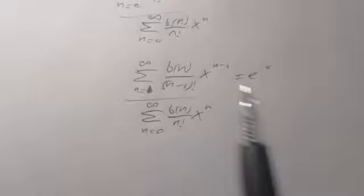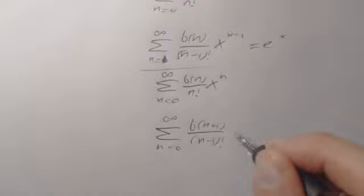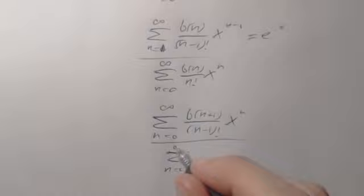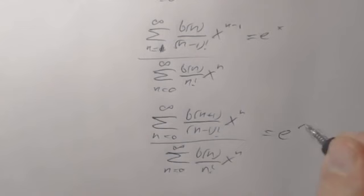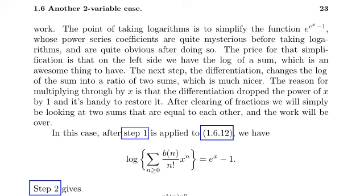Multiplying through by x restores the power dropped by differentiation. After clearing fractions by multiplying both sides by the denominator, we get the sum from n=1 to infinity of B_n / (n-1)! times x^n equals x e^x times the sum from n=0 to infinity of B_n / n! times x^n. The book left it in the form n/(n!) rather than 1/(n-1)!, perhaps for ease when equating coefficients.